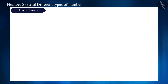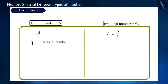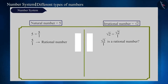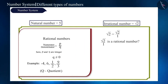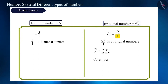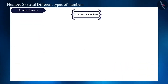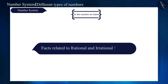Just as we can represent natural number 5 as a rational number by writing 5 by 1, can we also write root 2 as root 2 by 1 and say it is a rational number? According to the definition of rational number, both p and q must be integers. Q, which we have taken as 1, is an integer, but root 2 is not an integer. So we cannot represent it as a rational number. That's all in today's session. We discussed some facts related to rational and irrational numbers. See you in the next video. Thank you.